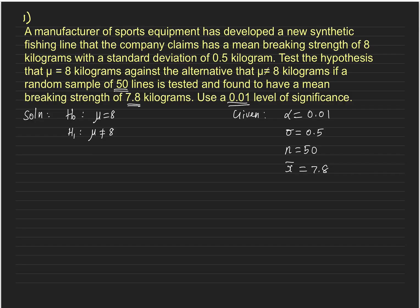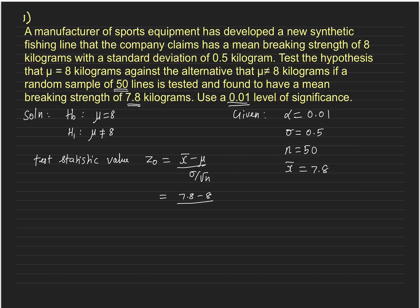Next, identify the appropriate statistic. Since sample size is 50, the appropriate statistic is z, because the distribution of x-bar approximates a normal random variable. Therefore the test statistic is z, and the test statistic value z₀ is x-bar minus mu divided by sigma over root n, which equals 7.8 minus 8 divided by 0.5 over root 50, giving approximately minus 2.83.